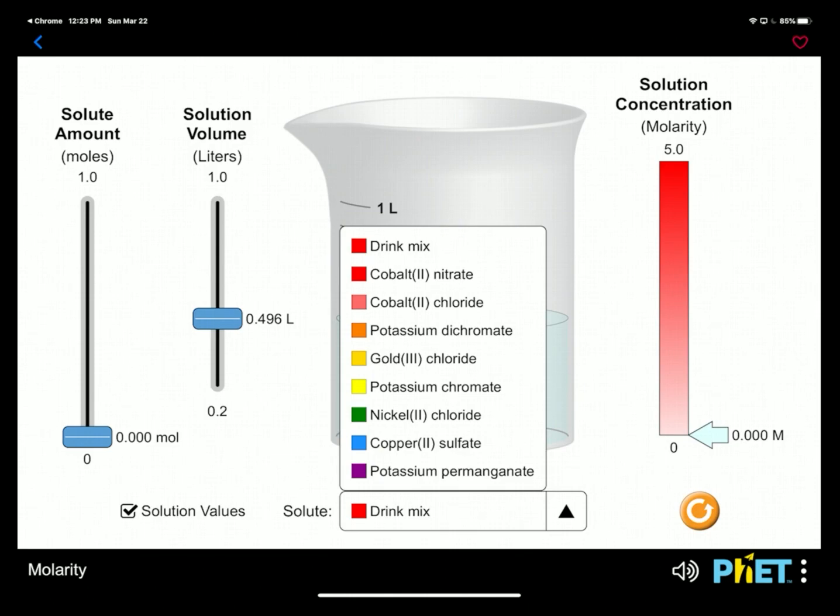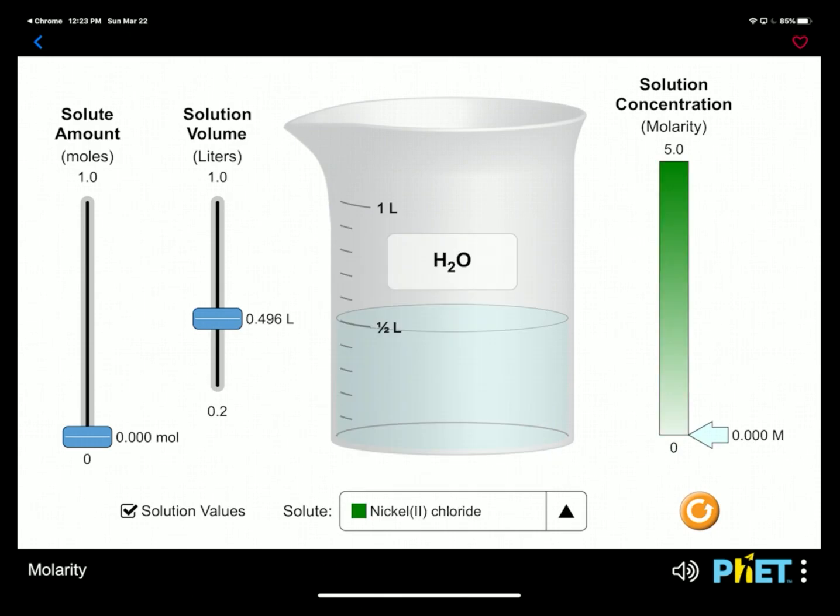All right, instead of drink mix, let's get a little more serious compound. So we're going to use an ionic compound. Let's choose pretty green nickel chloride, nickel(II) chloride. And at this point, if you look at the far left slider, there's no solute in it, so there's no nickel chloride in there. And therefore, if you look all the way over on the right at the molarity concentration, so the molarity is number of moles of solute per liter of solution, so there's none in there, so it's sitting at zero.